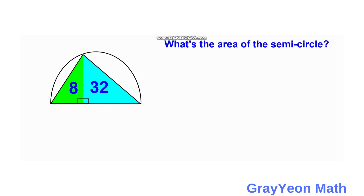Welcome to Grayon Math. We are asked to solve this problem: what's the area of the semicircle? We have a triangle inside a semicircle, divided into two right triangles with areas 8 square units for the green and 32 square units for the blue.